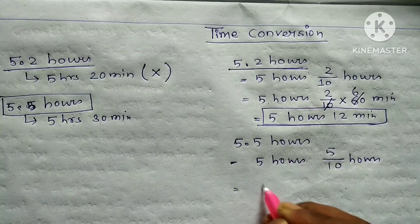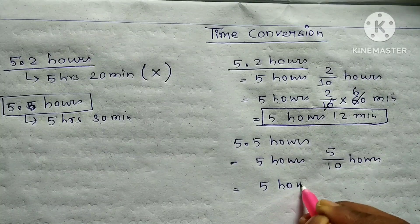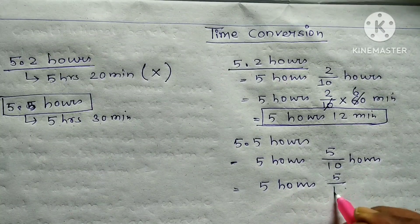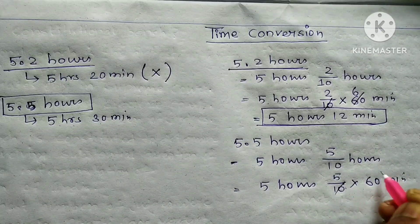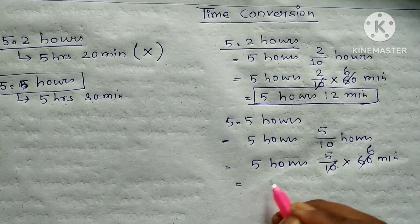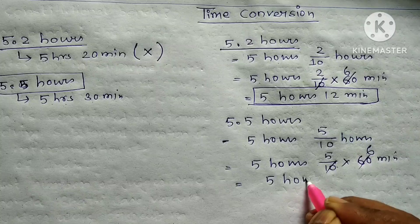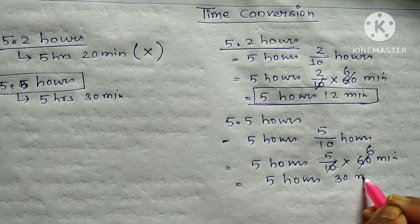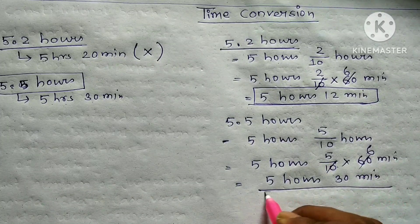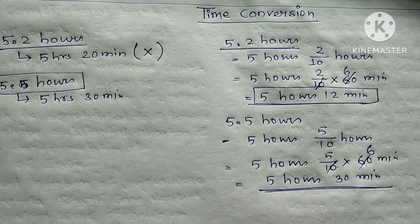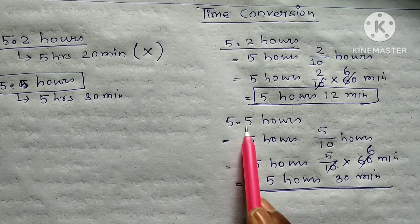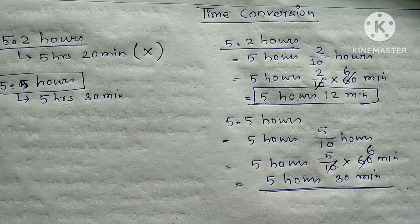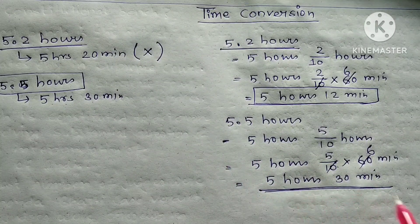For 5.5 hours, that's 5 hours plus 0.5. To convert 0.5 to minutes, multiply by 60, which gives us 30 minutes.